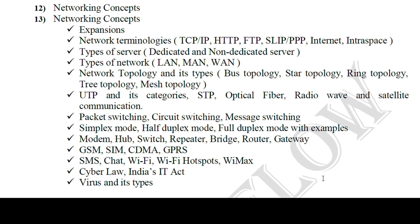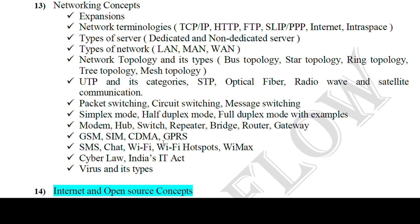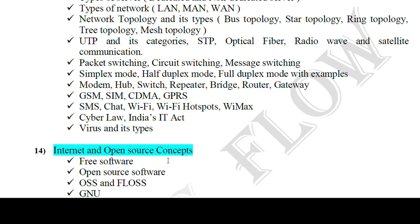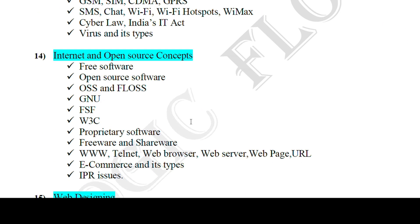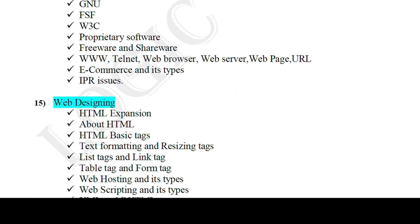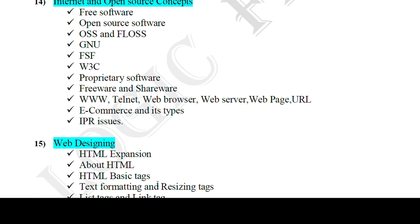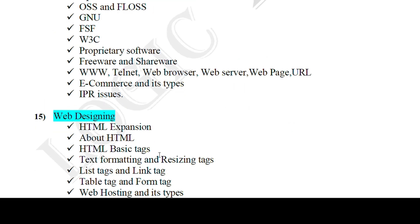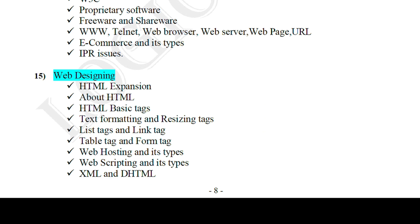Out of 10 chapters, you can prepare these topics. For networking concepts, refer only to these topics to answer the two MCQ questions — topics like communication modes and switching techniques. Internet and open source is an optional chapter. For web designing, also an optional chapter, refer to the listed topics for MCQ only.